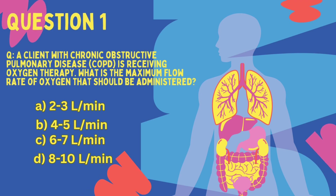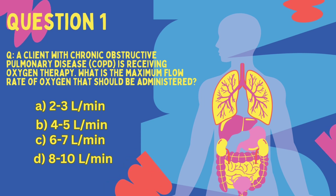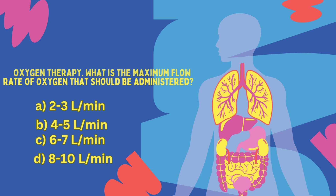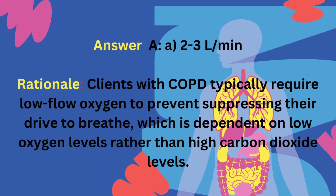Question 1. A client with chronic obstructive pulmonary disease (COPD) is receiving oxygen therapy. What is the maximum flow rate of oxygen that should be administered? A. 2-3 L/min, B. 4-5 L/min, C. 6-8 L/min, D. 8-10 L/min. Answer: A, 2-3 L/min. Rationale: Clients with COPD typically require low-flow oxygen to prevent suppressing their drive to breathe, which is dependent on low oxygen levels rather than high carbon dioxide levels.